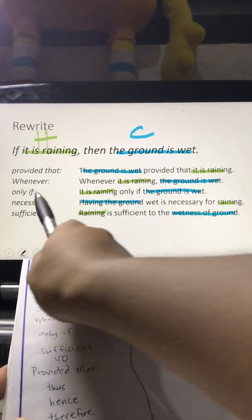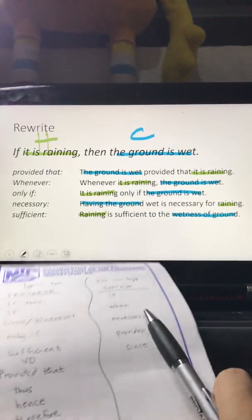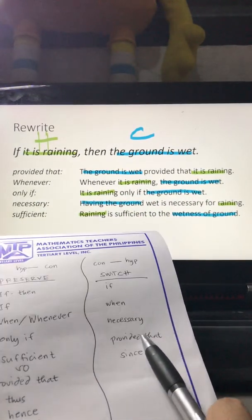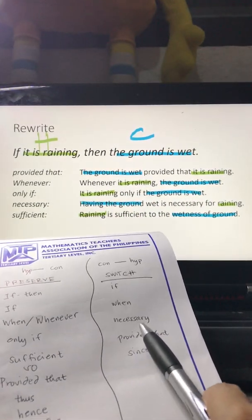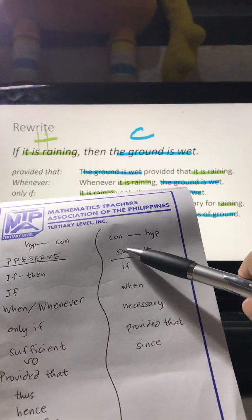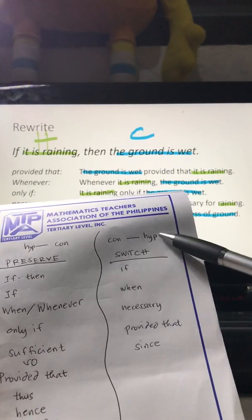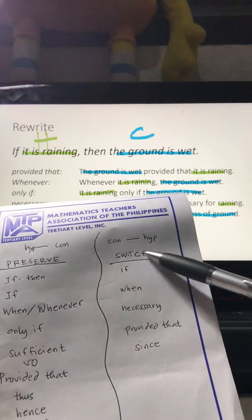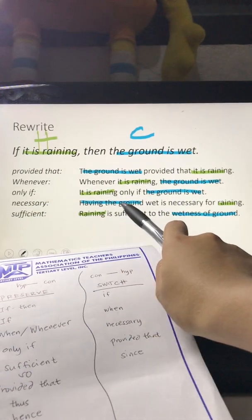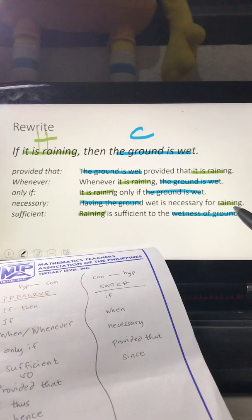'Necessary' falls under switch. So the pattern is: conclusion is necessary for hypothesis — blue conclusion first, then 'is necessary for,' then green hypothesis.